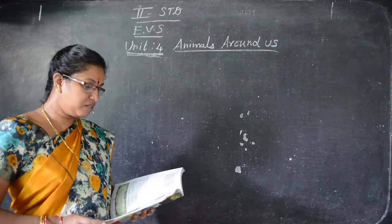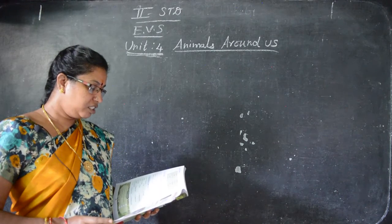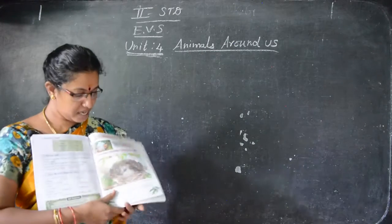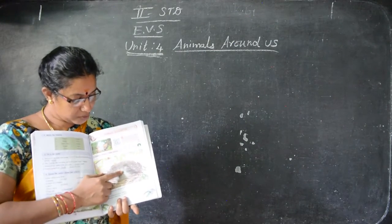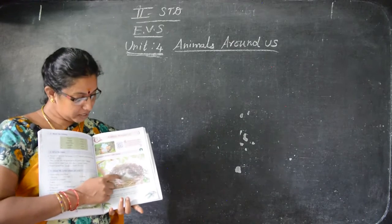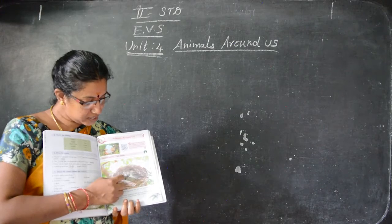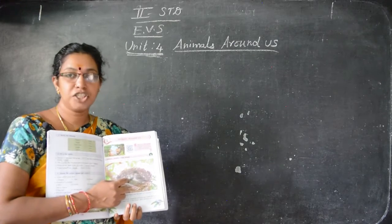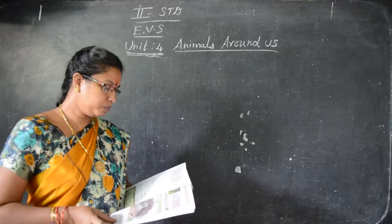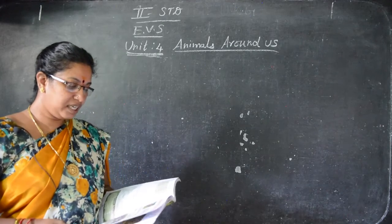Take page number 109, unit 4, animals around us. See the headings: domestic animals, farm animals. Then, Chikku and Tikku are two little sparrows. See here — one is Chikku and another is Tikku.